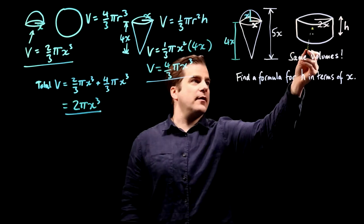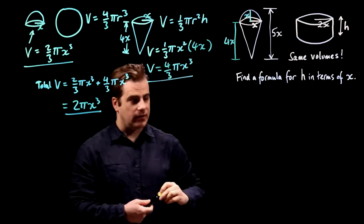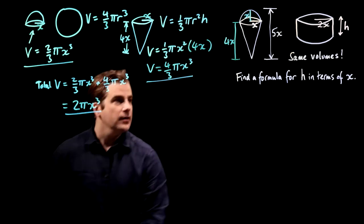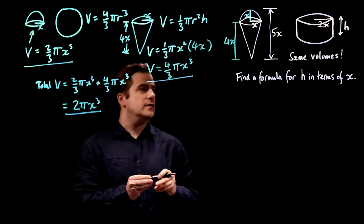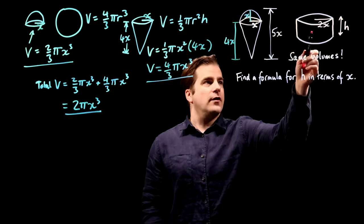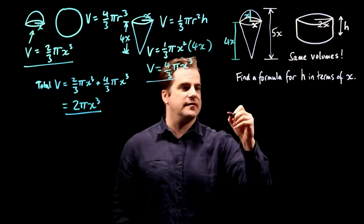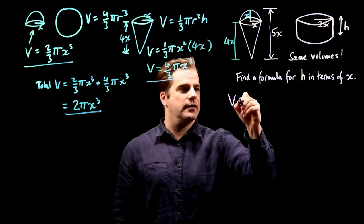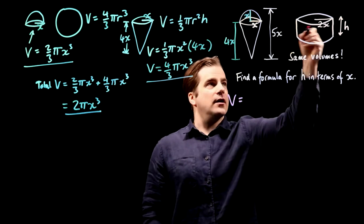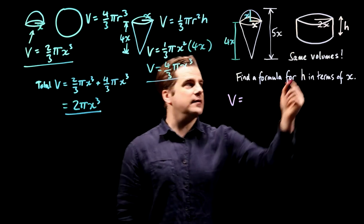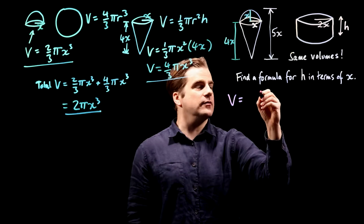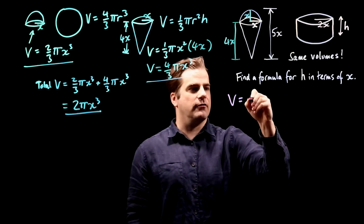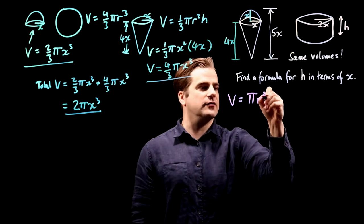Now what about the cylinder? Volume of a cylinder, pretty simple. General formula is the area which is π r² times the height. So general formula first, π r² h.